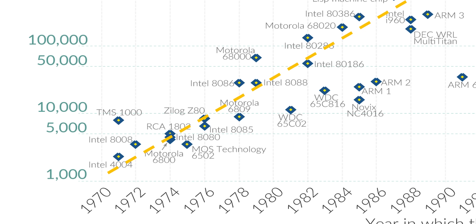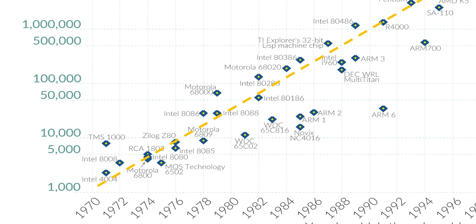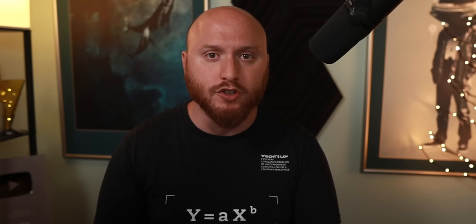In the 50-plus years since then, the number of transistors on a chip increased by over a million-fold, doubling roughly every 18 months on average. Talk about a mind-boggling pace of innovation.